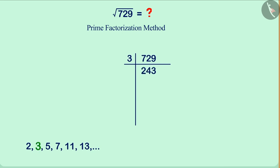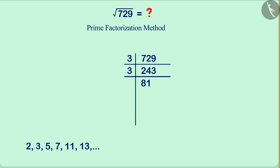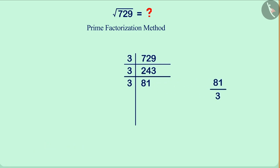Now find the smallest prime number that divides 243 completely — that is 3. Now find the smallest prime number that divides 81 completely — that is 3. Dividing 81 by 3 gives the result 27. Write it below 81.